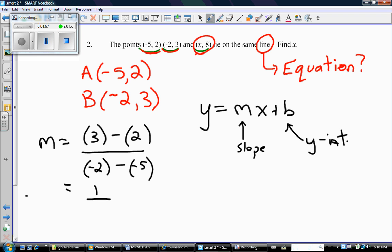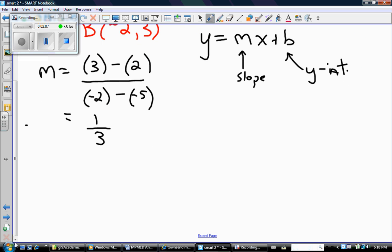3 minus 2, negative 2 minus negative 5 is negative 2 plus 5. There's my slope, 1/3. So I already know that my equation looks like this. I found the slope.